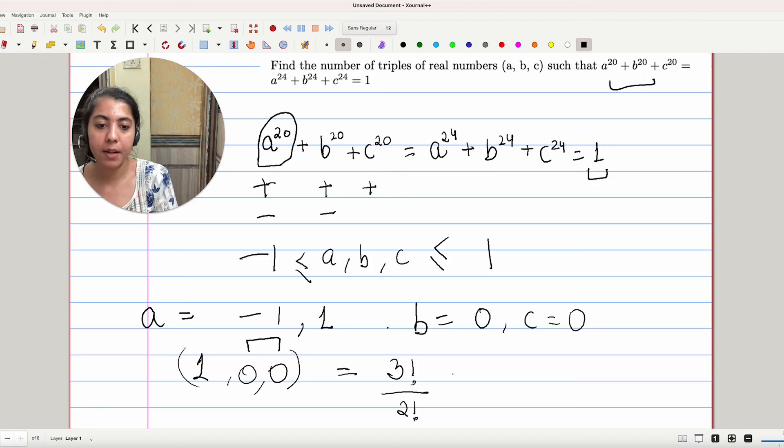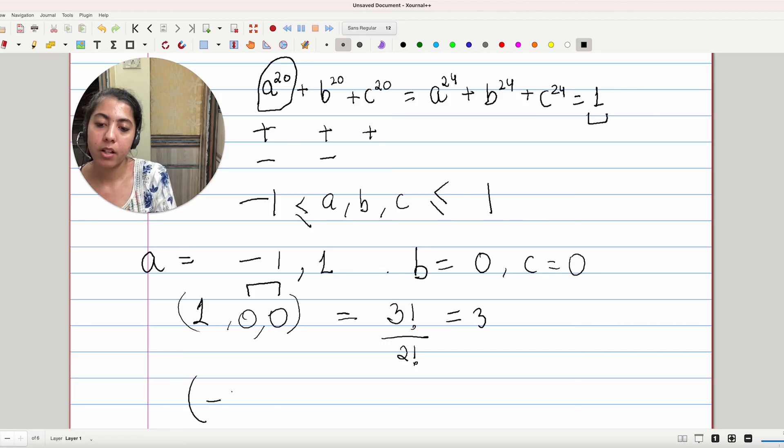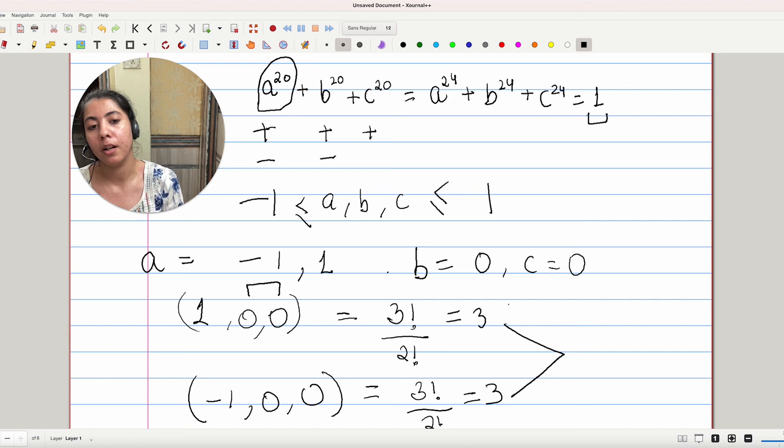So that will give us, and similarly for minus 1, 0, and 0, we'll have the same number of cases and we'll get the answer as addition of these two numbers, or the total number of cases that are possible. Or in other words, we can say the total number of triplets of such kind that they satisfy this equation.